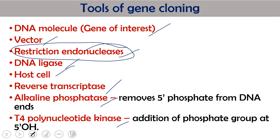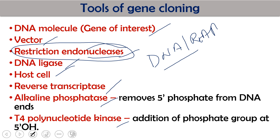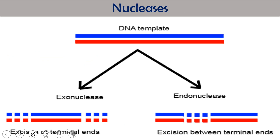These are the different tools we have seen in the previous lecture — we require gene of interest, vector, restriction endonuclease, ligase, host, reverse transcriptase, alkaline phosphatase, T4 nucleotide kinase, S1 nuclease, Klenow fragment, lambda exonuclease, exonuclease III, Bal31 exonuclease, TdT, linker, and adapter. Today I'm going to focus on restriction endonuclease. A nuclease is any enzyme which digests nucleic acid — either DNA or RNA.